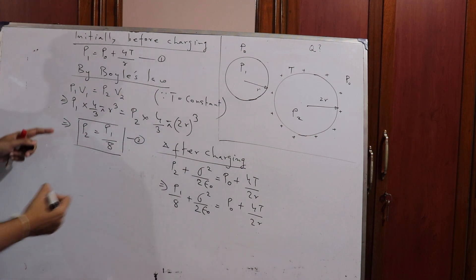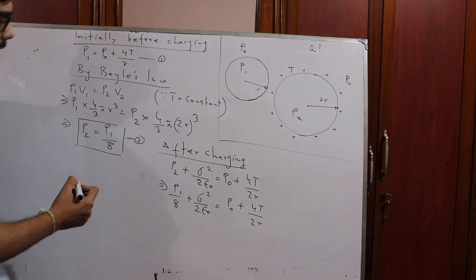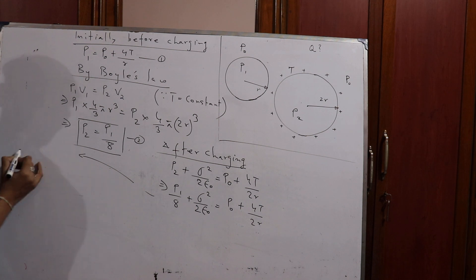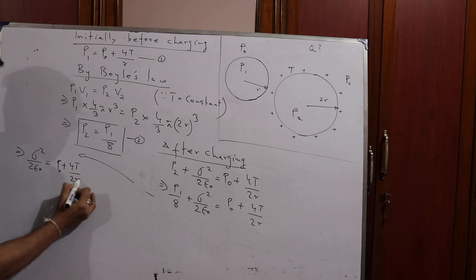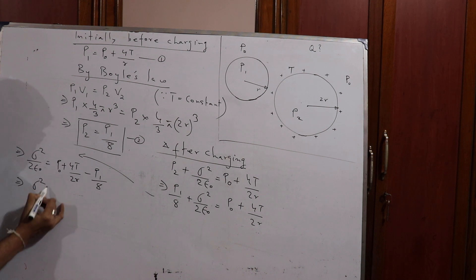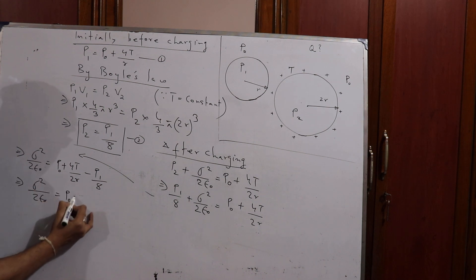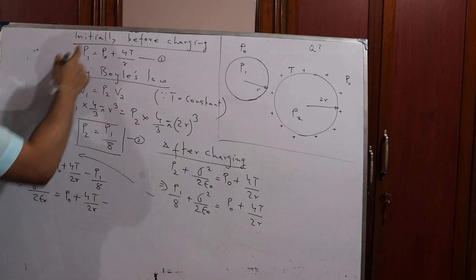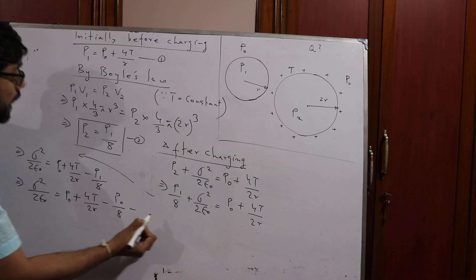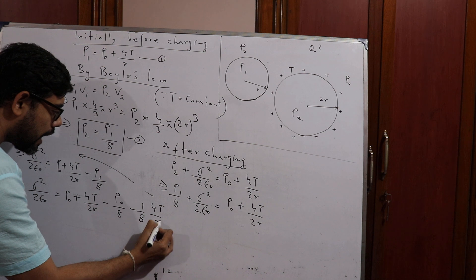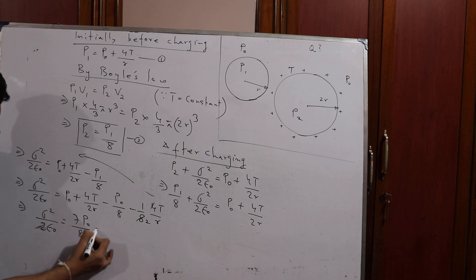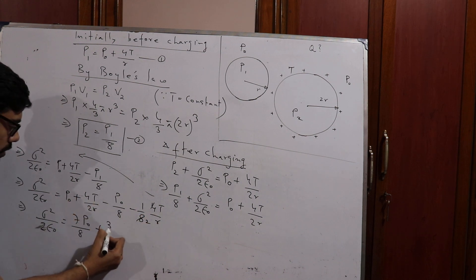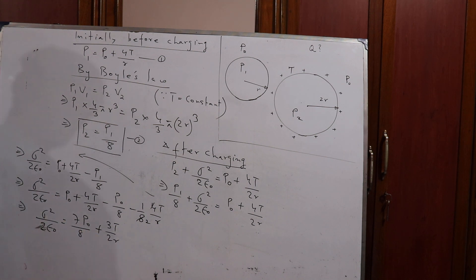Substituting P2 = P1/8, we get: P1/8 + σ²/2ε₀ = P0 + 4T/2r. So σ²/2ε₀ = P0 + 4T/2r − P1/8. Since P1 = P0 + 4T/r, substituting: σ²/2ε₀ = P0 + 4T/2r − (1/8)(P0 + 4T/r) = P0 − P0/8 + 4T/2r − 4T/8r, which simplifies to 7P0/8 + 3T/2r.